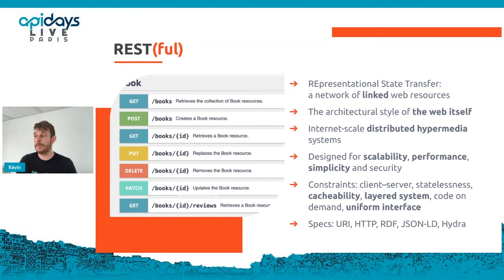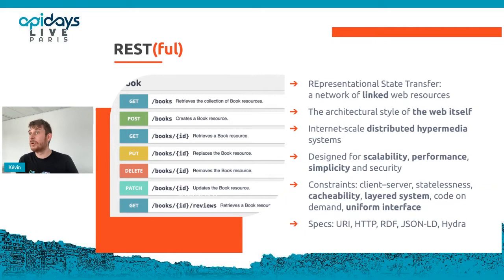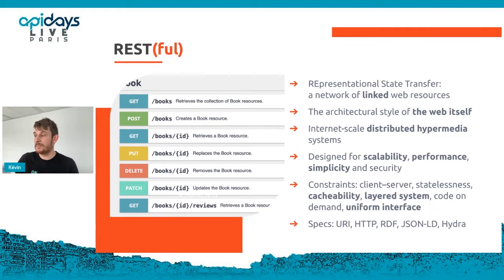Among these standards, some very important ones are: URI — the mechanism of identifiers of the web including URLs; HTTP — the protocol to retrieve and interact with resources; RDF — Resource Description Format, the abstract data model of the web; JSON-LD — a flavor of JSON standardized by the W3C, a serialization format of the RDF data model; and Hydra — an RDF vocabulary often used with JSON-LD to describe all the capabilities of your web API, including the resources available, how to interact with them, properties, types, and links.